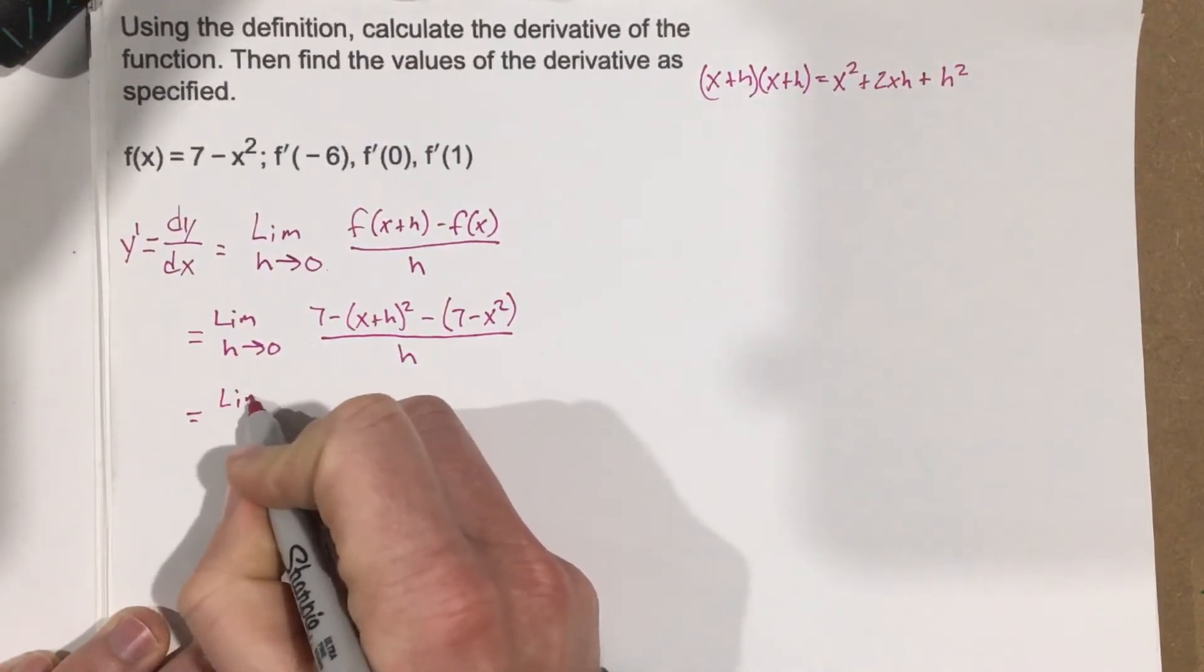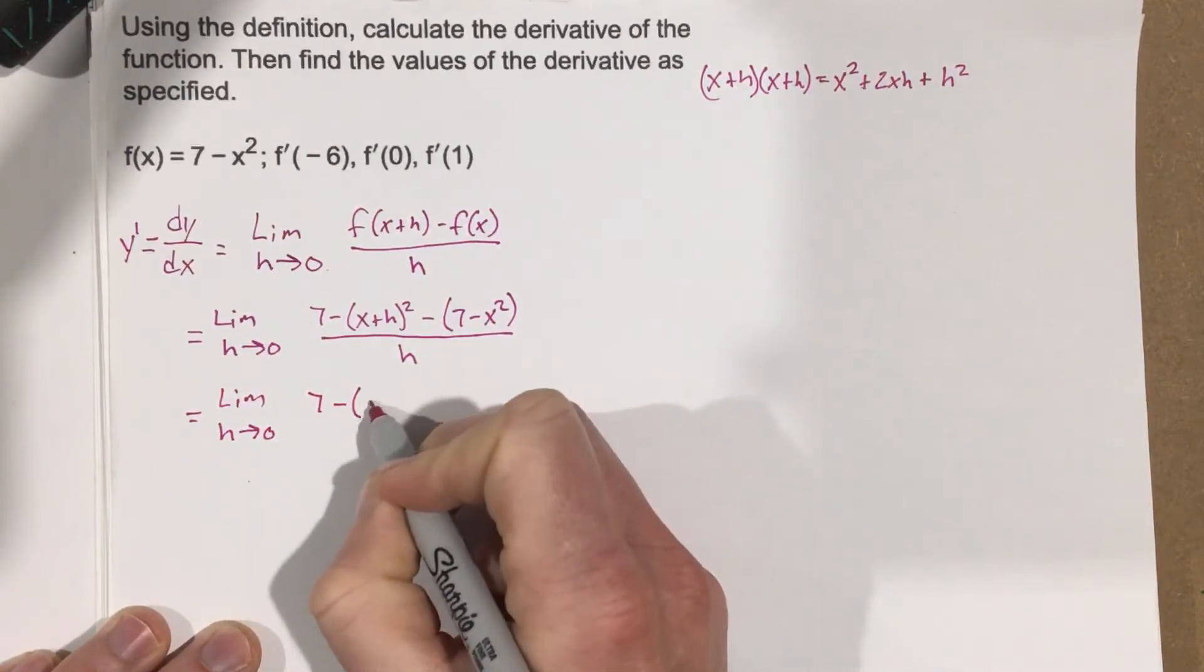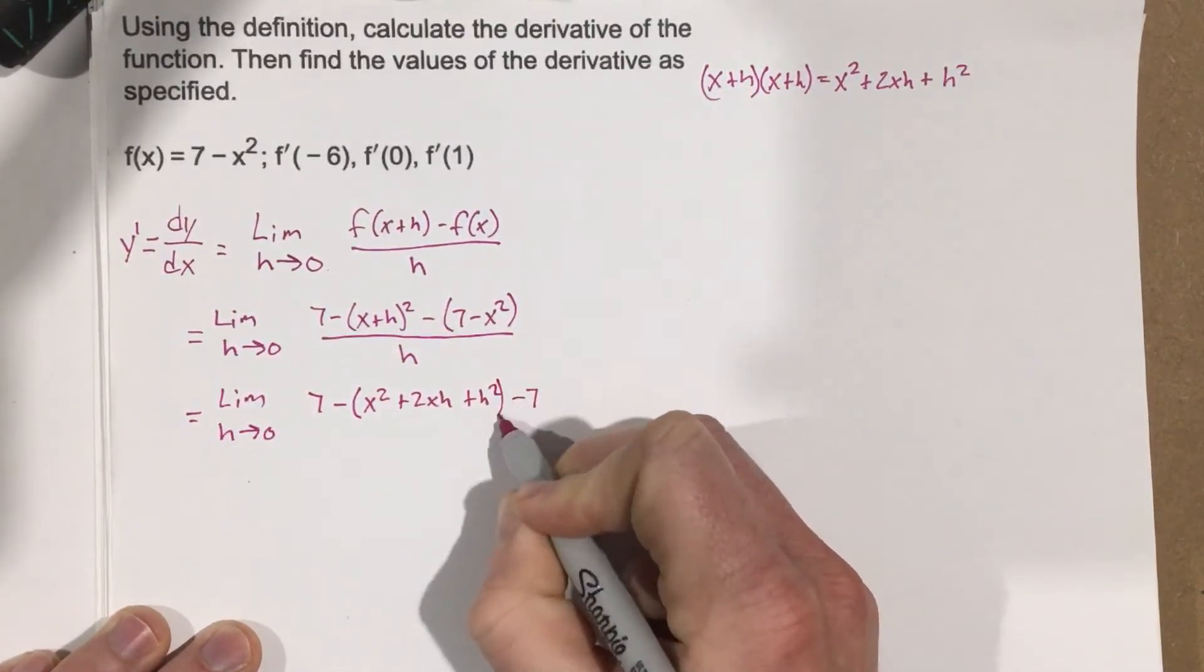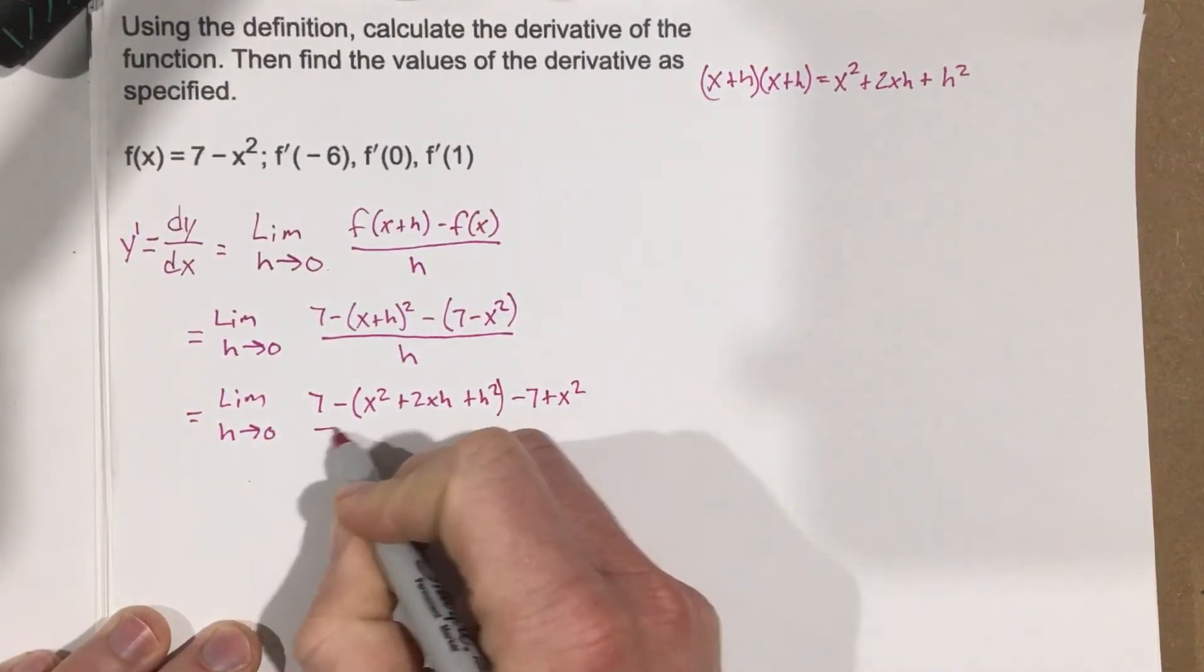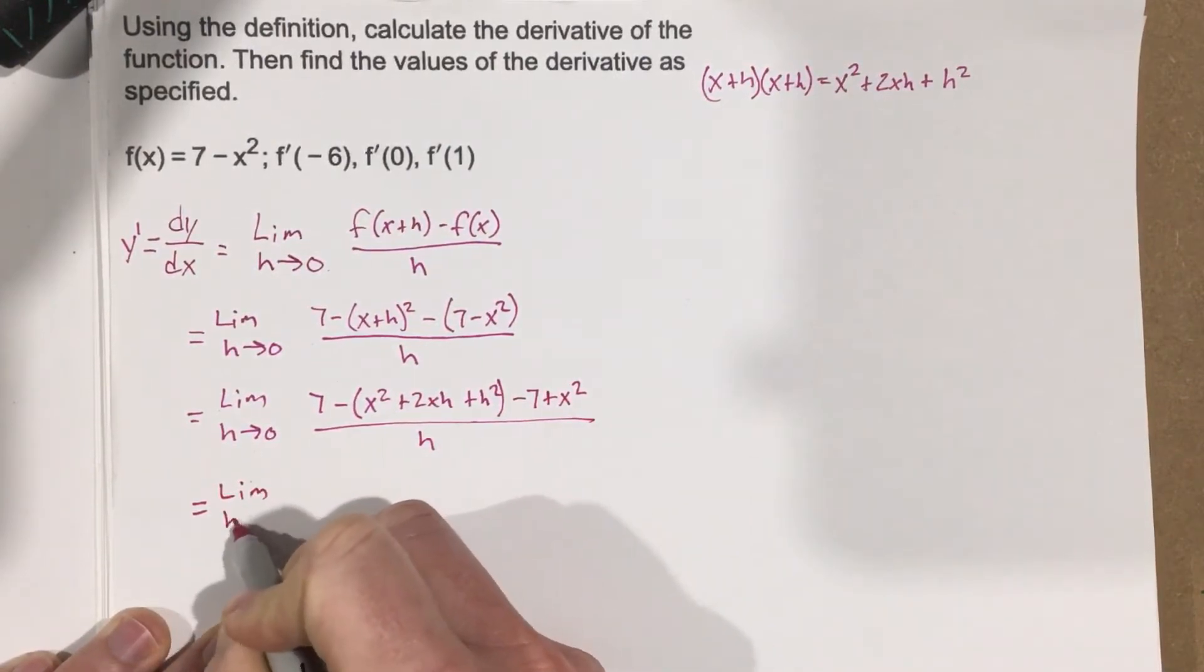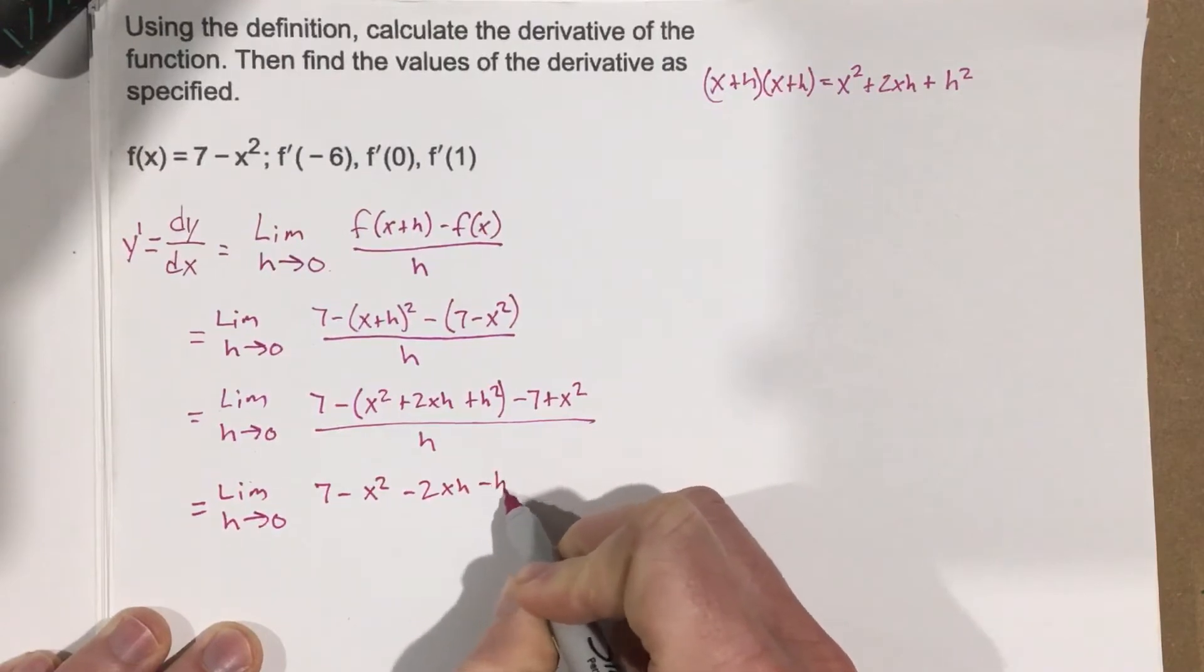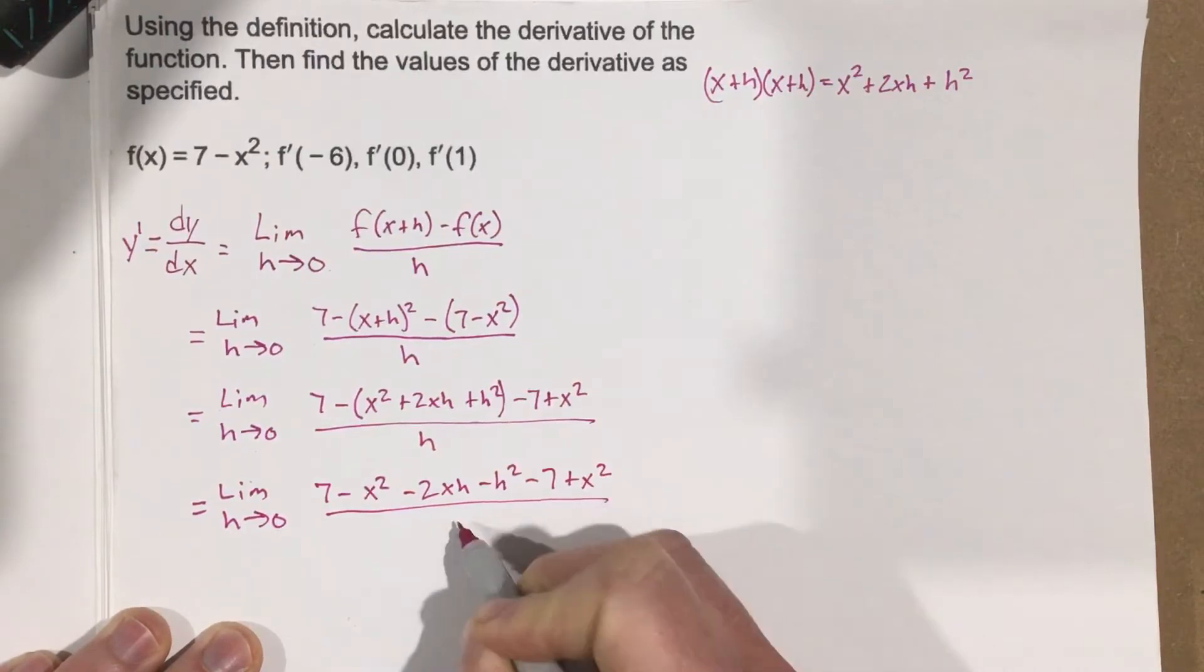We're going to get limit as h approaches 0, 7 minus x squared plus 2xh plus h squared minus 7, when you distribute the negative, plus x squared, all over h. That gives you limit as h approaches 0, 7 minus x squared minus 2xh minus h squared minus 7 plus x squared, all over h.